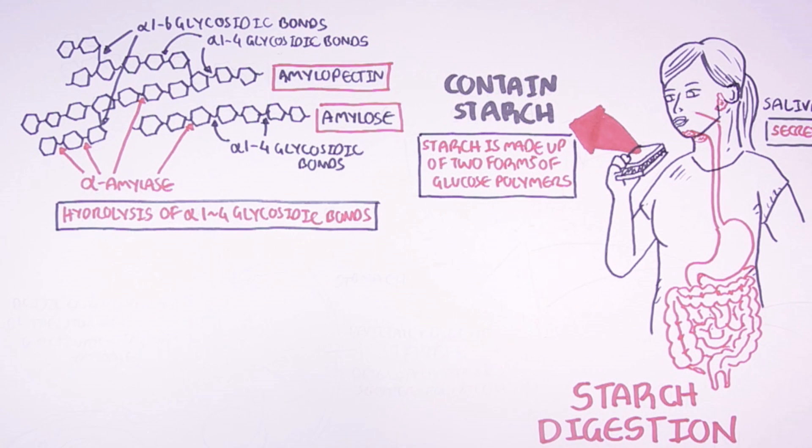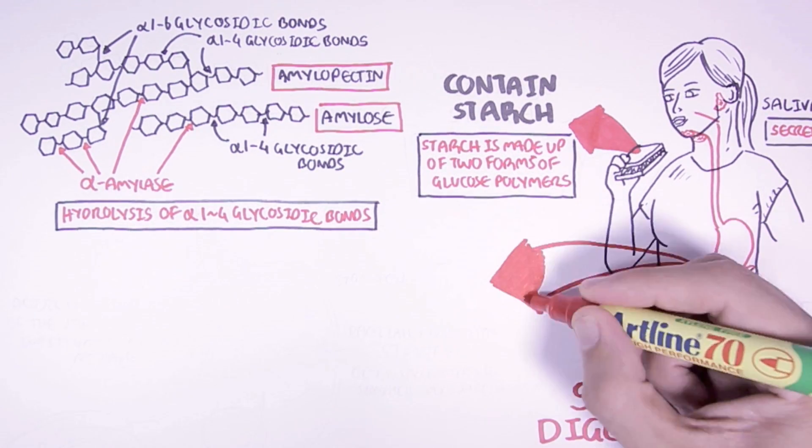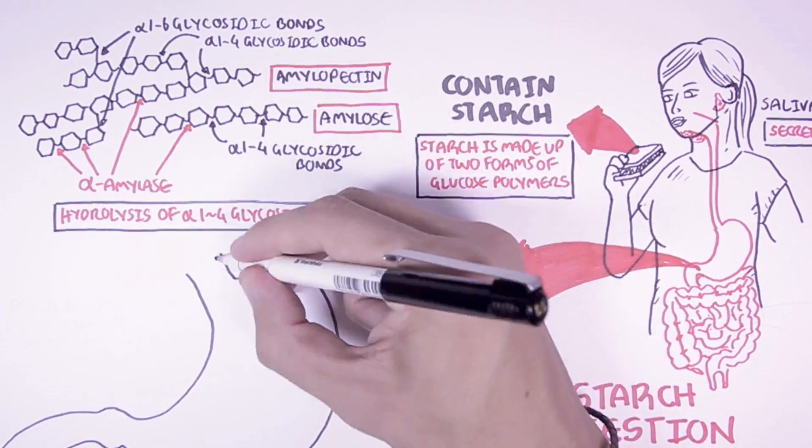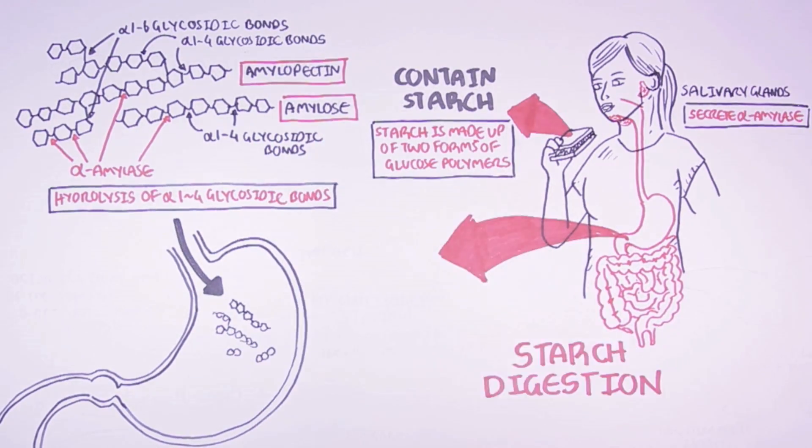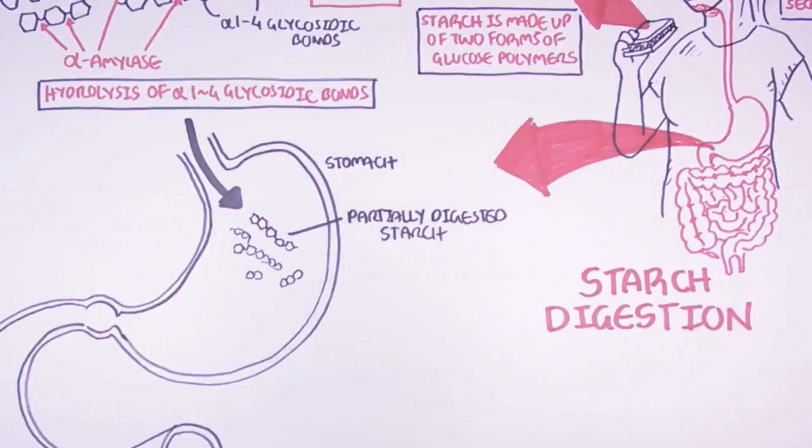Amylase will only break down the starch partially. And then from the mouth the starch will travel towards the stomach here. Starch is only partially hydrolyzed into oligosaccharides and shorter polysaccharides.